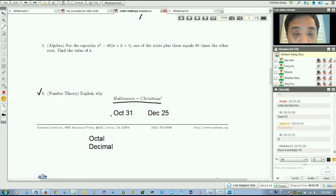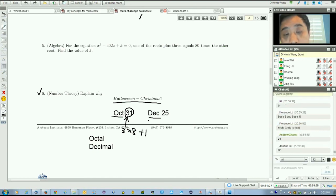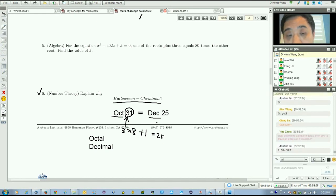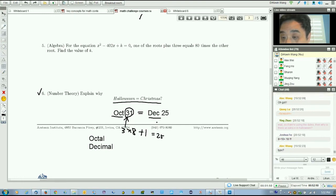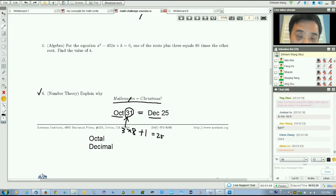Base 8 is called octal, and decimal means base 10. So 31 in base 8—the place value of 3 means 3 times 8 plus 1, which equals 25 in base 10. That's why octal 31 equals decimal 25. That's why Halloween and Christmas are equal. Go tell your friends about this!